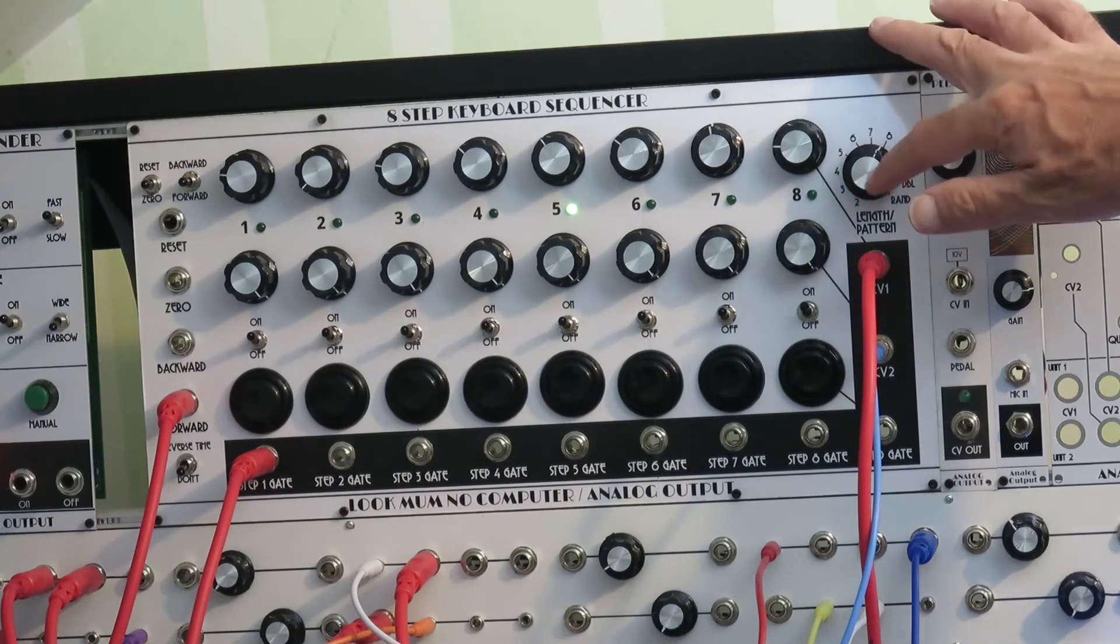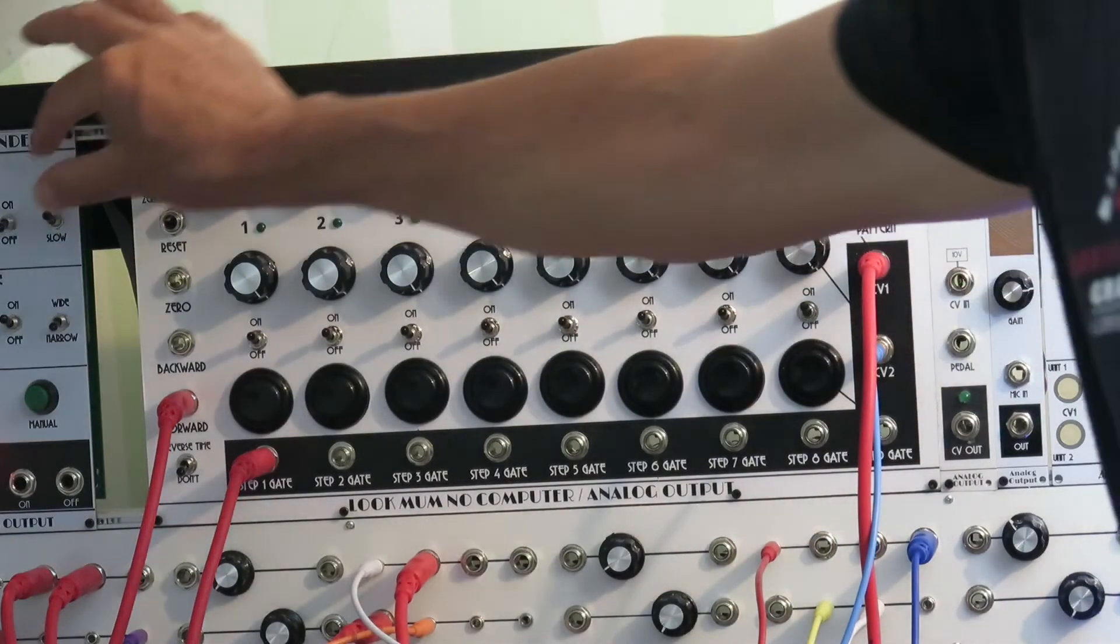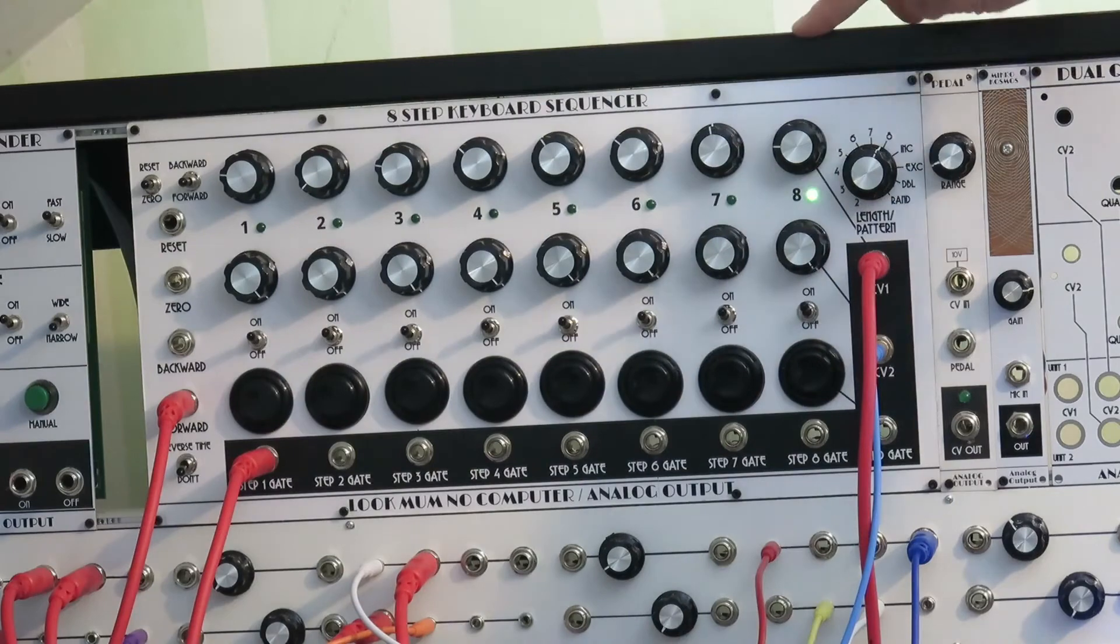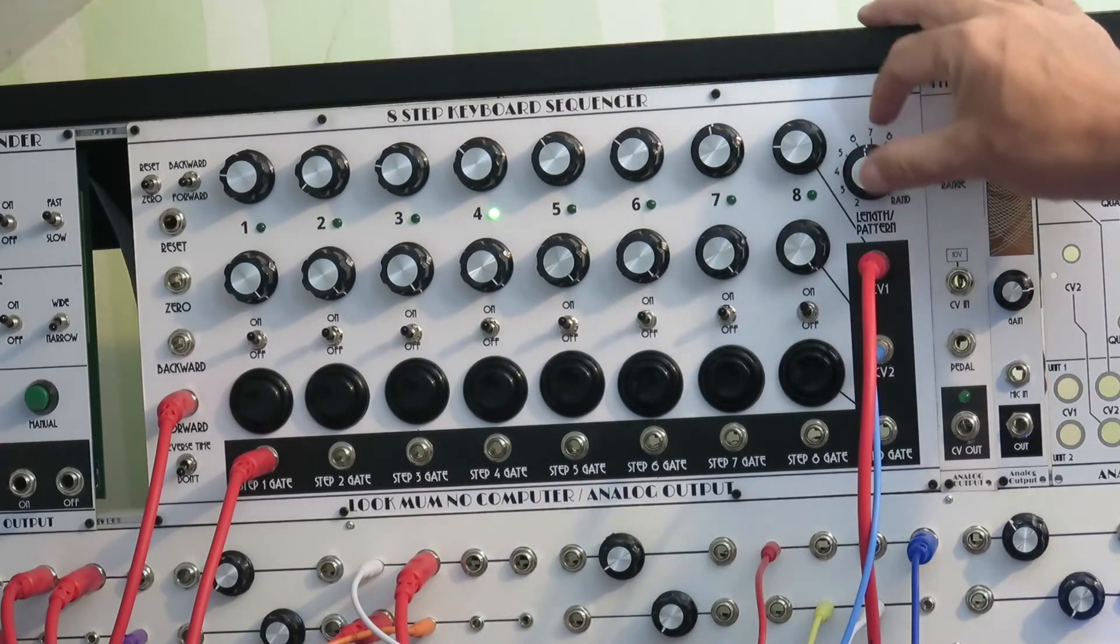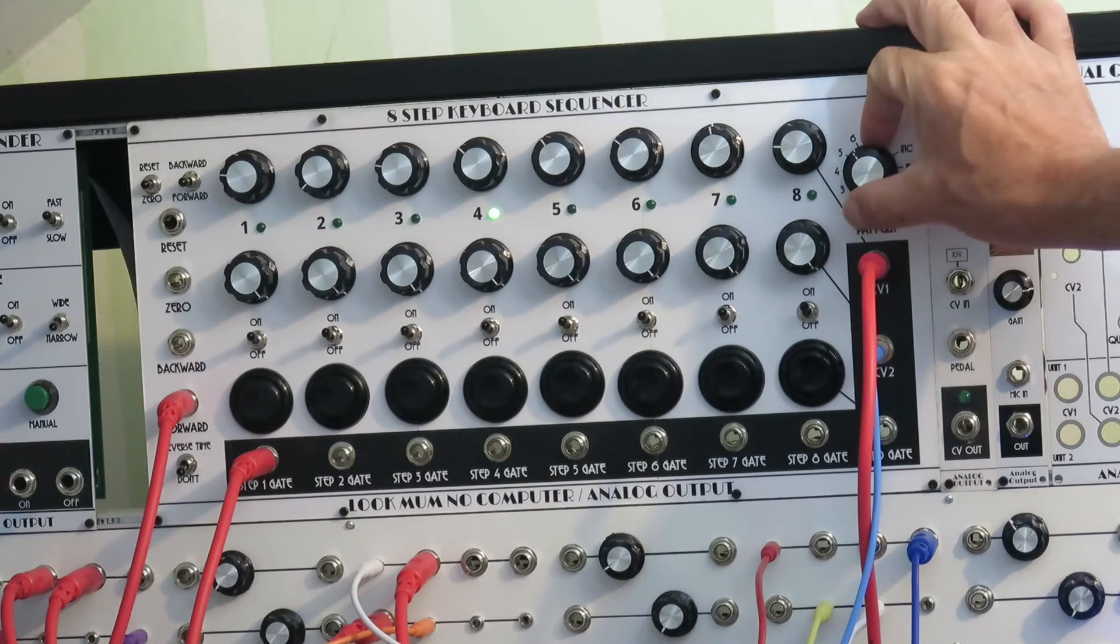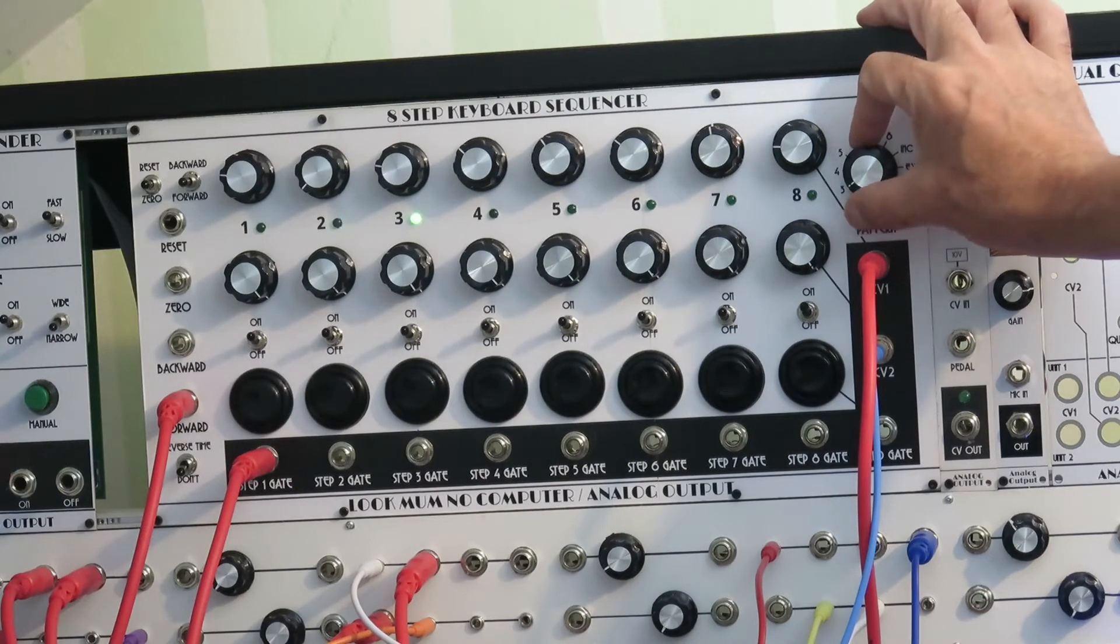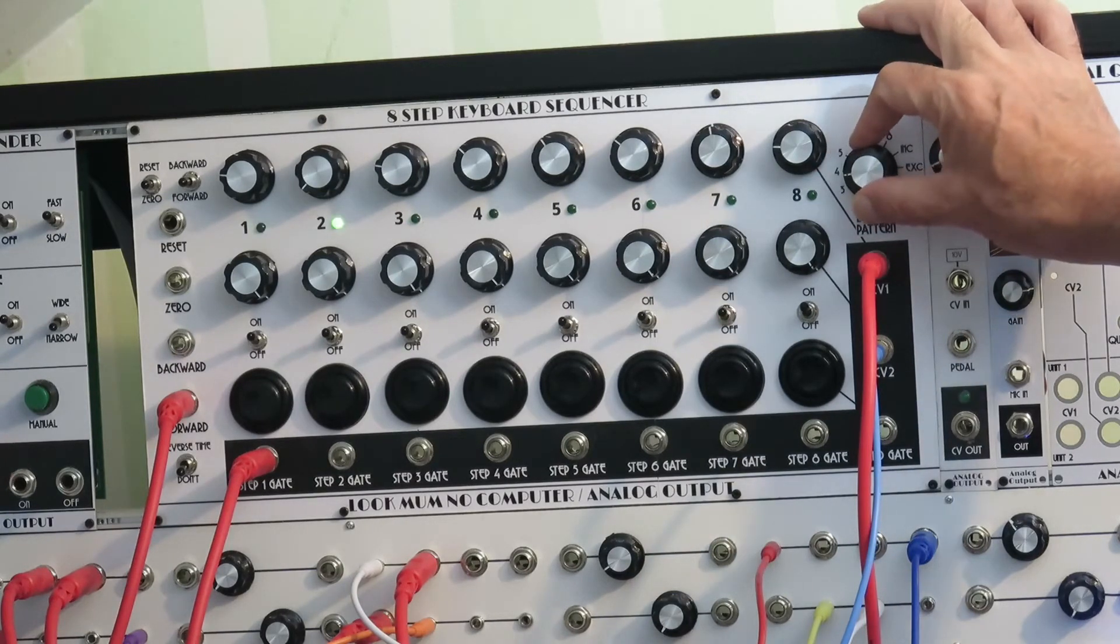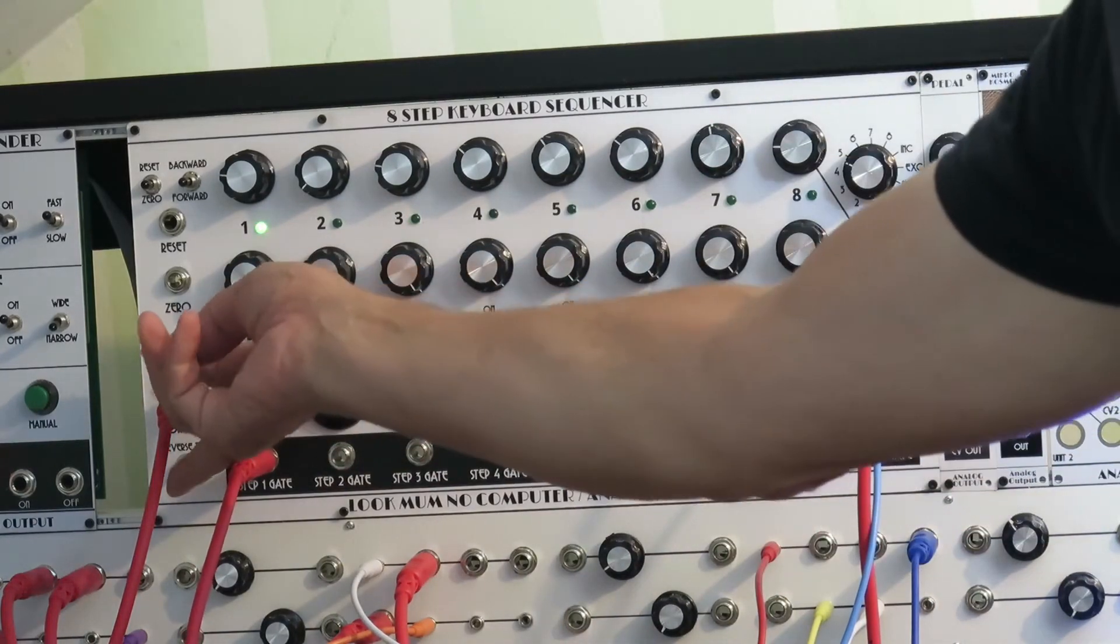And then the one other thing that's different from the original is this rotary switch over here, which has 12 positions and the first seven are labeled two through eight. I've got it on the eight position now. So I get an eight step sequence. If I turn it down to seven, it only uses the first seven. There's six. There's five, four, three, two. You're not allowed to have a one step sequence. That's just silly. And this works in backwards mode.